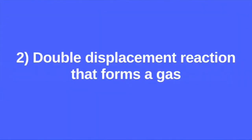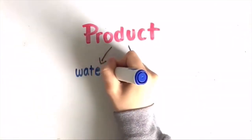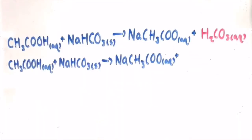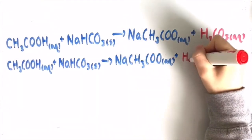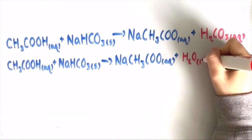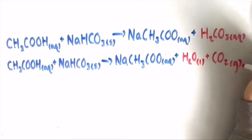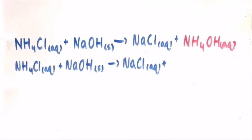Secondly, we have double displacement reactions that form a gas. During this reaction, one product quickly decomposes into water and gas. An example would be acetic acid plus sodium bicarbonate yields sodium acetate plus carbonic acid. We further break down carbonic acid into water and carbon dioxide, giving us our final equation.